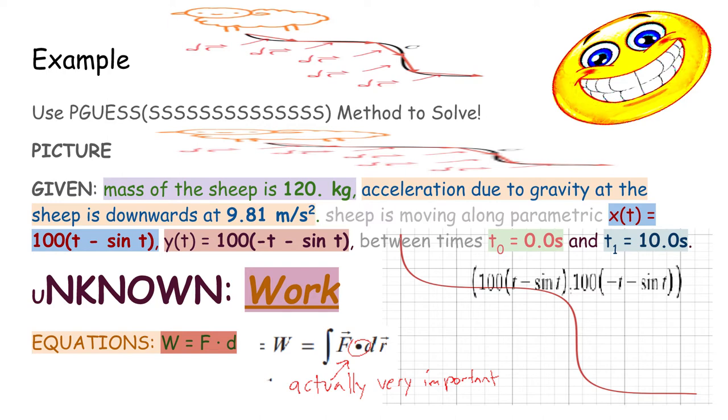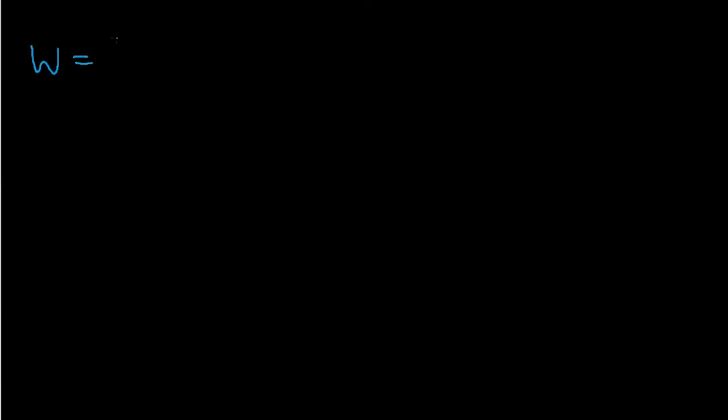The unknown is the work done on the sheep, and we can use the equation W = ∫F·dr to find that. Starting with the work formula, W equals the line integral along the parametric curve C of the force dot dr. The force is constant, it's just the force due to gravity directly downwards, so the x component is 0 and the y component is negative mg.